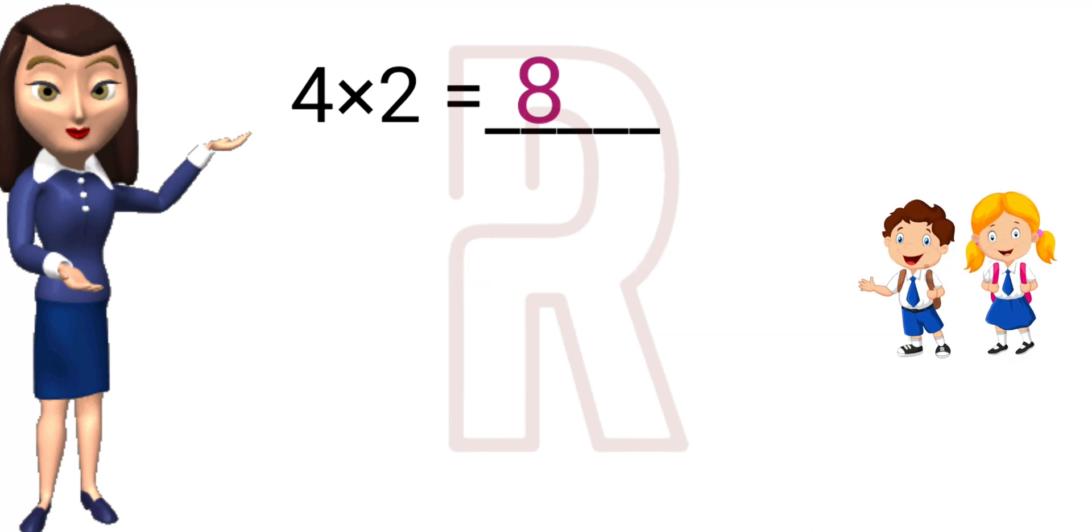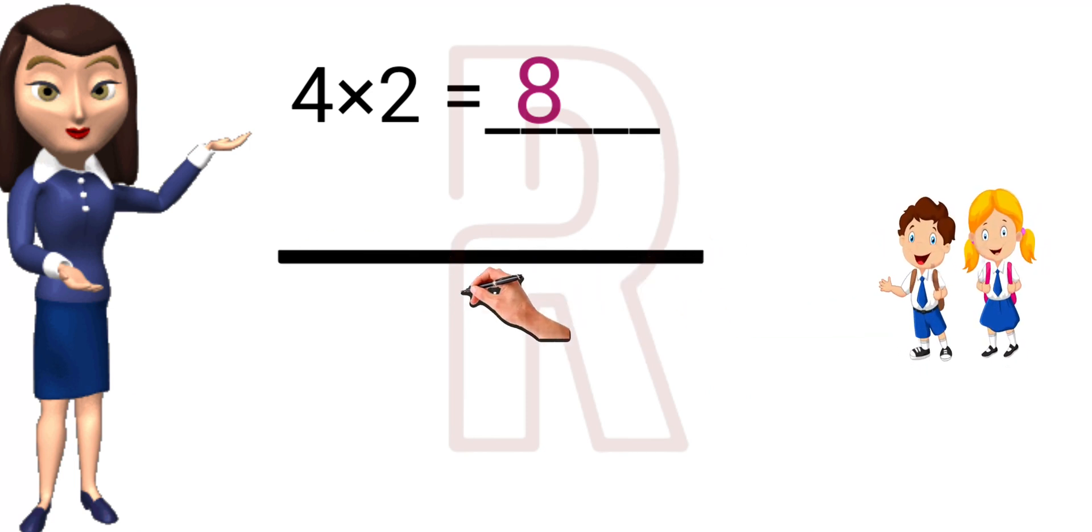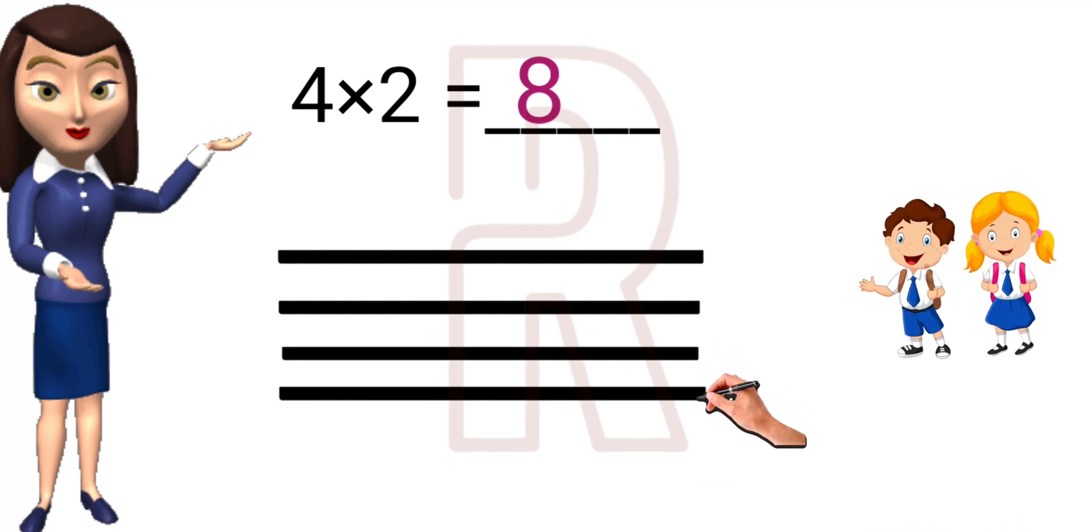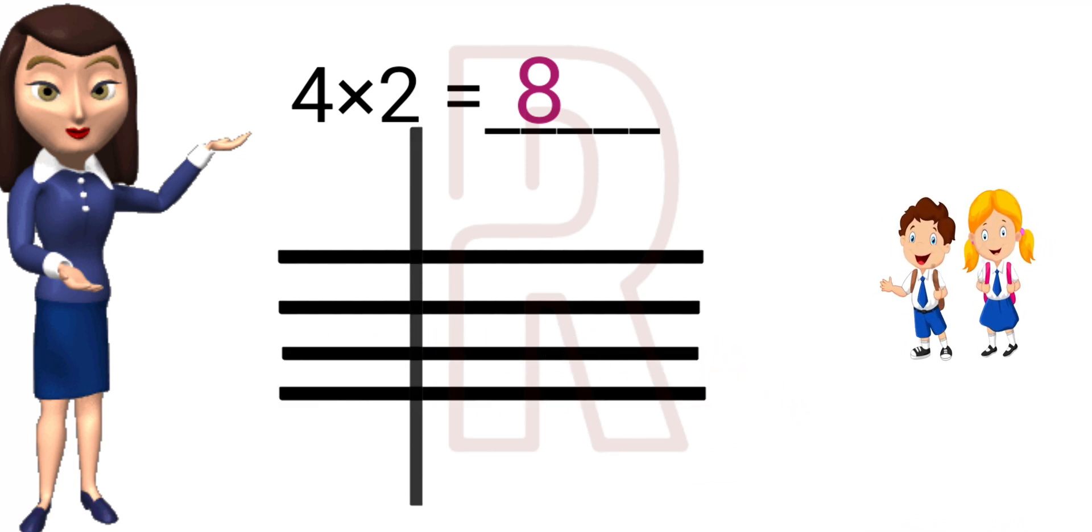In this question, we have two numbers 4 and 2. So for the first number 4, we have to draw 4 horizontal lines. And for the number 2, we have to draw 2 vertical lines.